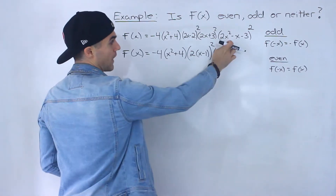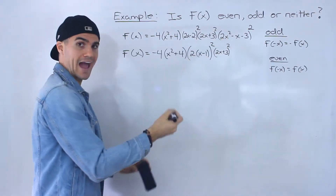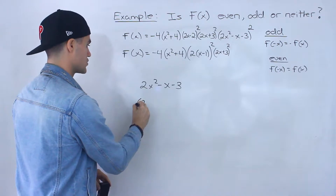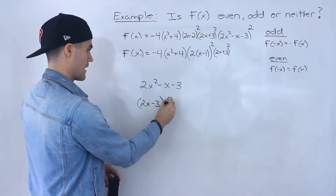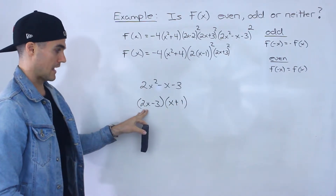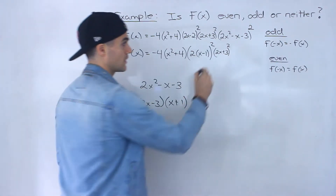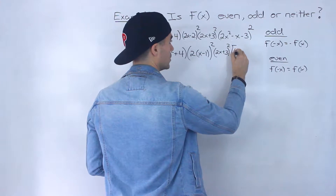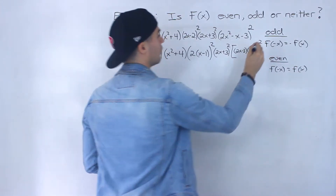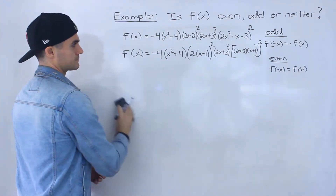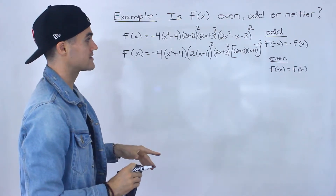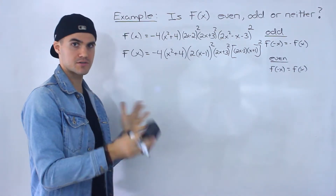So that would be squared. Now this bracket here, this 2x squared minus x minus 3, that actually can factor further. If you use decomposition on this, you would end up getting 2x minus 3 and x plus 1. This factors into that. So you actually want to use this instead. In that bracket, I'm going to put 2x minus 3 times x plus 1 — all that gets squared. So I'm just simplifying and factoring these two factors here further, which is going to make that comparison process a little easier.